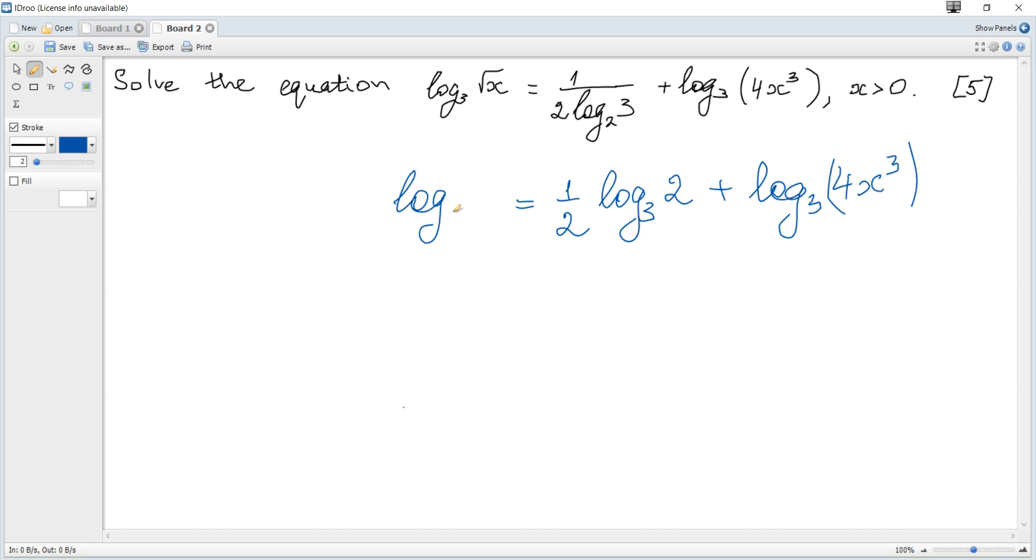On the left hand side there is log to the base 3 of square root of x. We can see that on the left hand side there is a single logarithm to the base 3. On the right hand side we need to move the half to the power of this 2, and it becomes 2 to the power of a half.